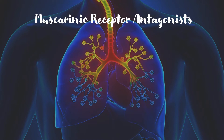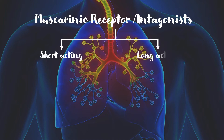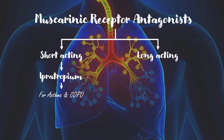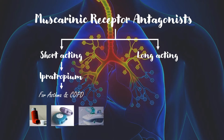Muscarinic receptor antagonists are divided into two categories by duration of action: short-acting and long-acting. Ipratropium is a short-acting muscarinic receptor antagonist used for quick relief of symptoms in asthma and COPD. Routes of administration include metered dose inhalers, dry powder inhalers, and nebulizers.